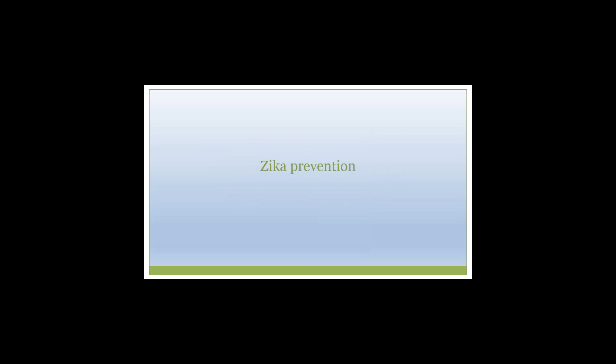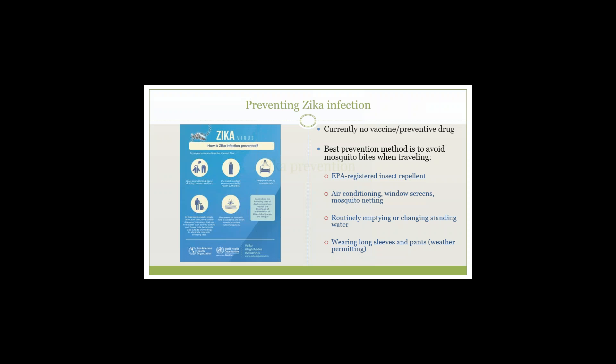No vaccine or preventive drug is available at this time, so prevention is important. The best way to prevent Zika is to avoid mosquito bites when traveling to an area where Zika is present. Use an EPA-registered insect repellent — many are safe for pregnant women and children, but be sure to check the product label for warnings. For information on how to best be protected against all travel-related diseases, visiting a clinician with expertise in travel medicine is recommended before a planned trip.